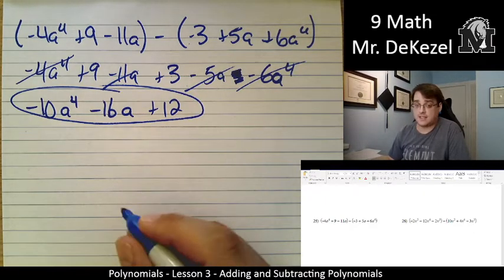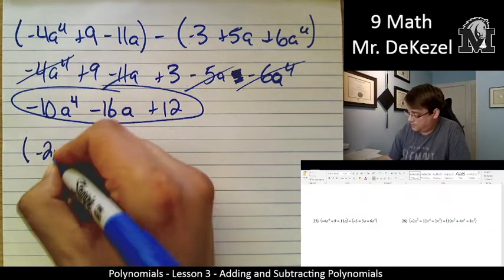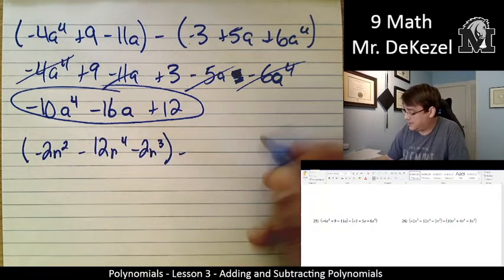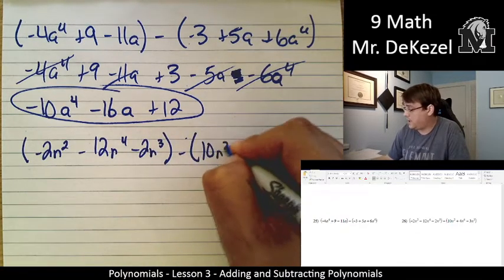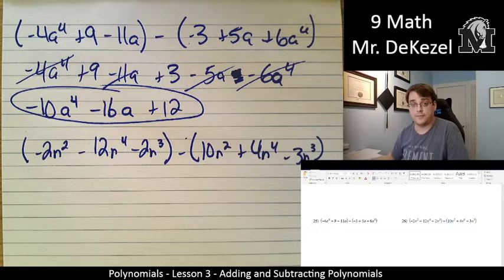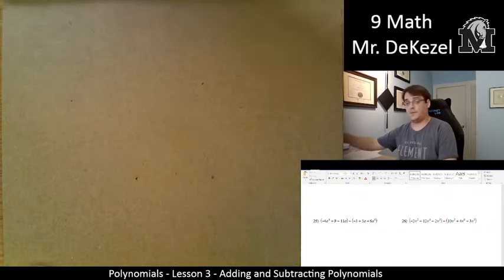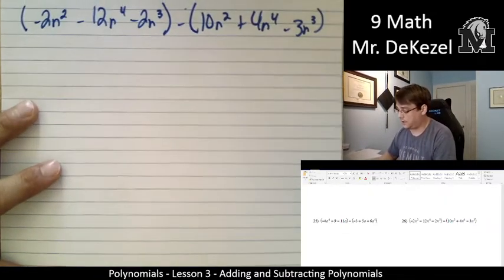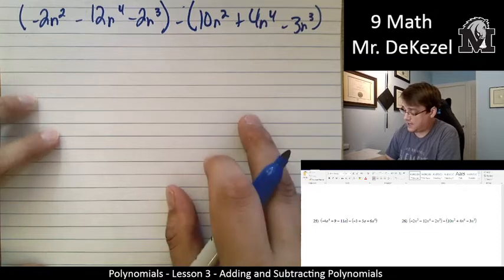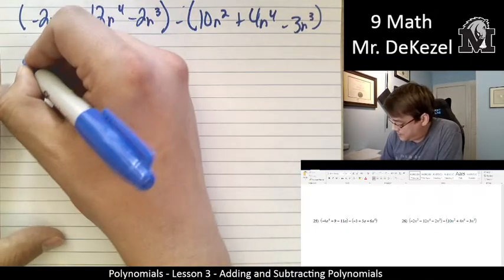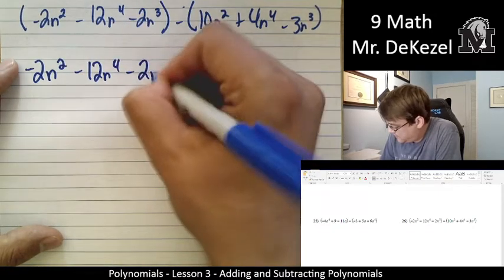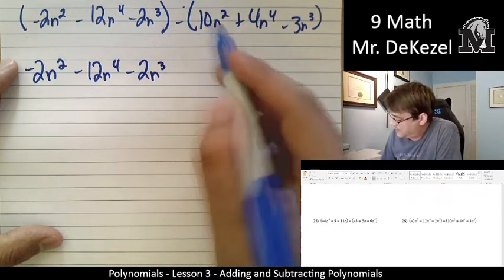Let's do the last problem. Minus 2n squared minus 12n to the power of 4 minus 2n to the power of 3 minus 10n squared plus 4n to the 4 minus 3n to the power of 3. It's a negative sign, so we're flipping everything on this side. Drop the brackets. This is positive, so it becomes negative 10n to the power of 2. This becomes negative 4n to the power of 4. This becomes positive 3n to the power of 3.